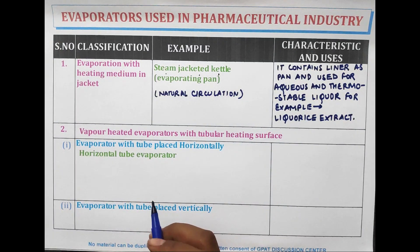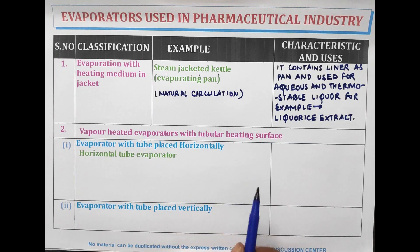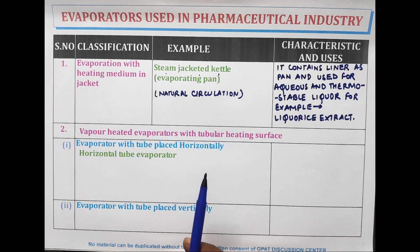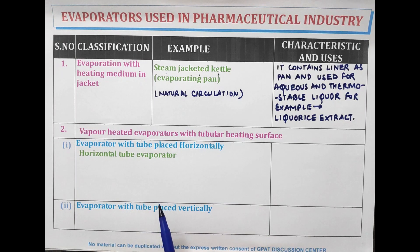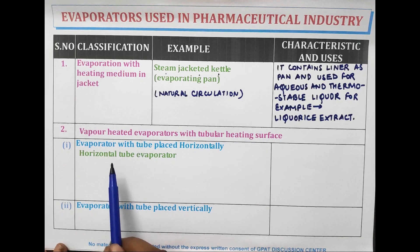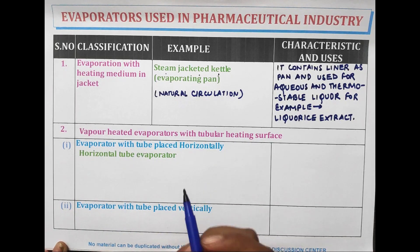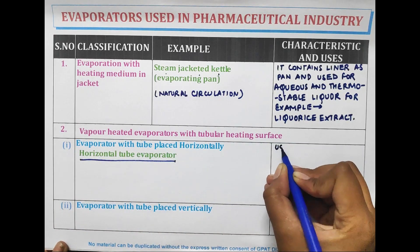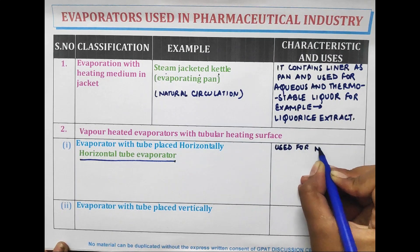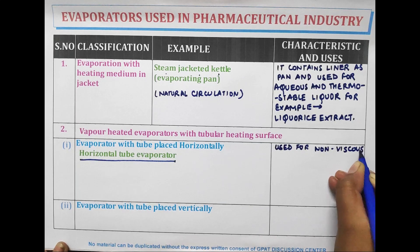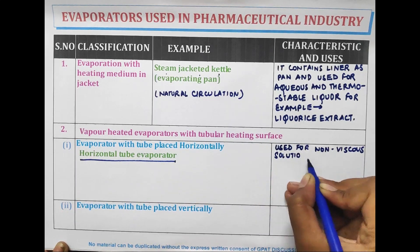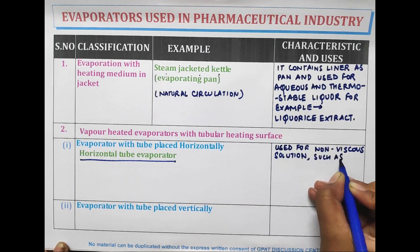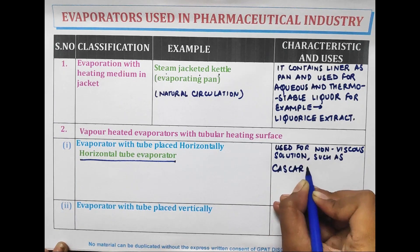The second type of evaporator is vapor-heated evaporators with tubular heating surface. The first subtype is the horizontal tube evaporator, where the tube is placed horizontally. It is used for non-viscous solutions such as cascara extract.